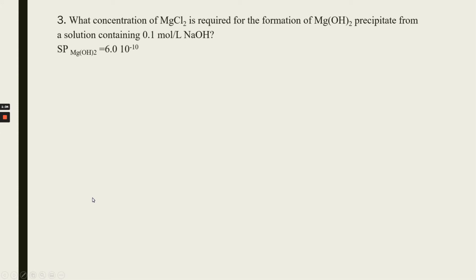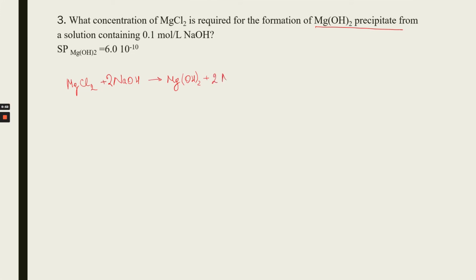Now let's do the next problem — please stop the video and write down the problem. First, let's write the equation for forming the precipitate. Magnesium hydroxide is a low-soluble compound. Magnesium chloride is soluble; we add sodium hydroxide and it gives us magnesium hydroxide. To balance the reaction we put 2 in front, plus 2 sodium chloride. Now let's write the heterogeneous equilibrium: Mg(OH)₂ crystalline, two arrows, forming Mg²⁺ and 2 OH⁻ ions.